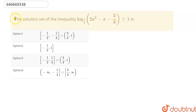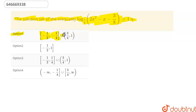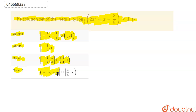Hello guys, so today our question is: the solution set of the inequality log base (5/8) of (2x² - x - 3/8) ≥ 1 is. Option 1 is [-1/2, -1/4] ∪ [3/4, 1). Option 2 is [-1/2, 1]. Option 3 is [-1/2, 1/4] ∪ (3/4, 1). Option 4 is (-∞, -1/4] ∪ [3/4, +∞).